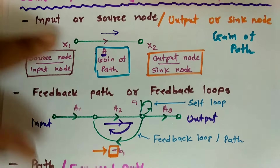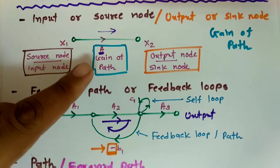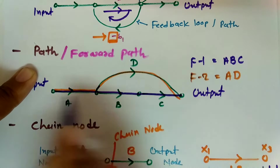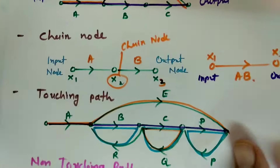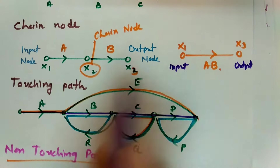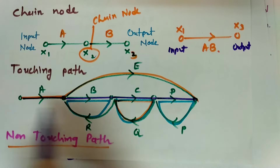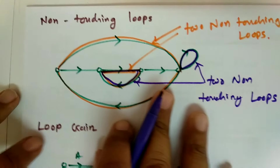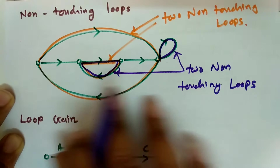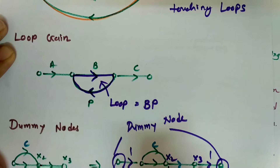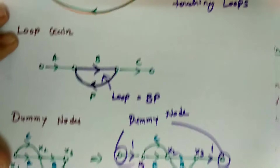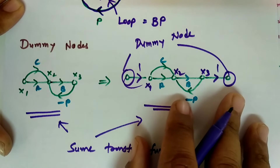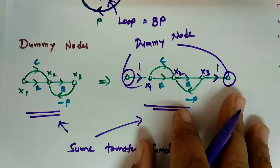Let us have a quick review: input or source node, output or sink node, path gain, feedback path, forward path, chain node — which is an extra node not connected to anything in between. Touching path means a path that gets touched by loops, and non-touching means a path not touching a loop. Two or more non-touching loops — nodes of those loops don't touch each other. Loop gain is the product of all link gains in the loop. Dummy node is an extra node added with gain 1. These are the main terms in signal flow graphs. Thank you for watching.